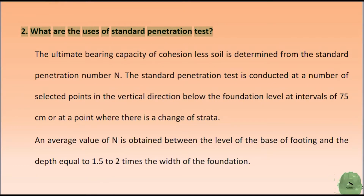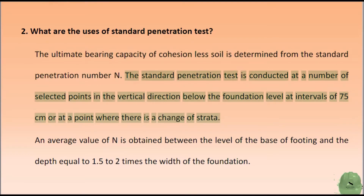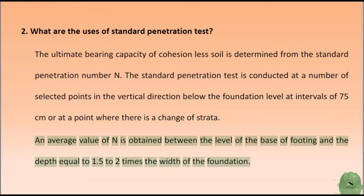What are the uses of the Standard Penetration Test? The ultimate bearing capacity of cohesionless soil is determined from the Standard Penetration Number N. The standard penetration test is conducted at a number of selected points in the vertical direction below the foundation level at intervals of 75 cm or at a point where there is a change of strata. An average value of N is obtained between the level of the base of footing and the depth equal to 1.5 to 2 times the width of the foundation.